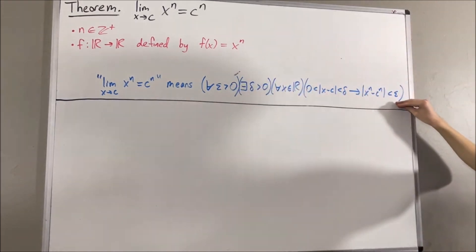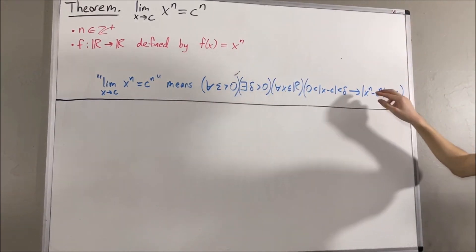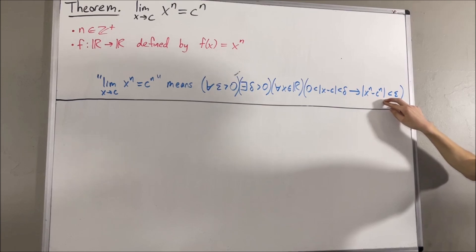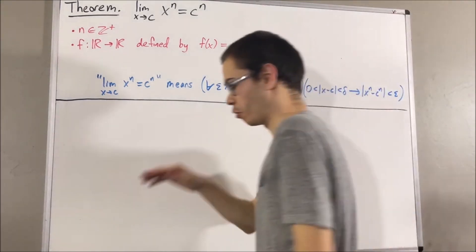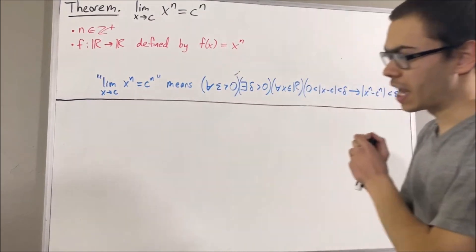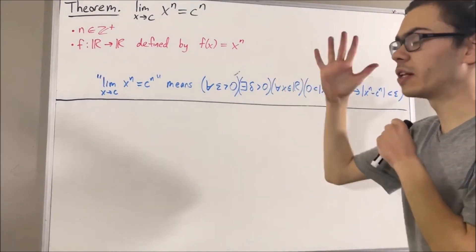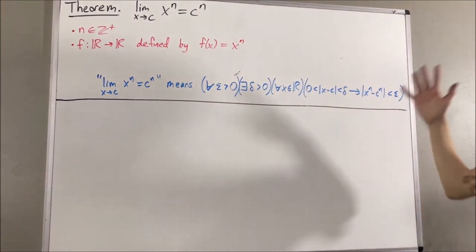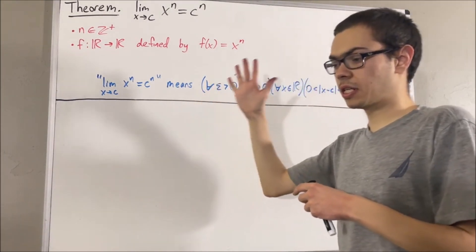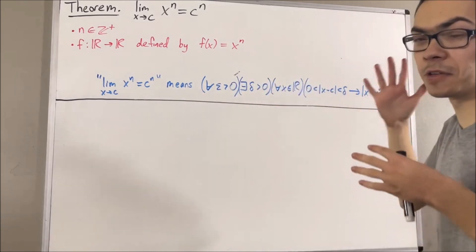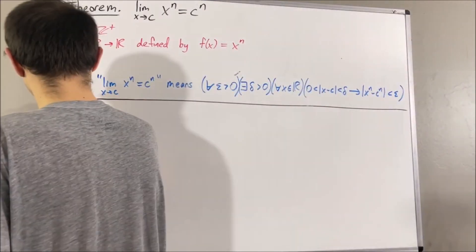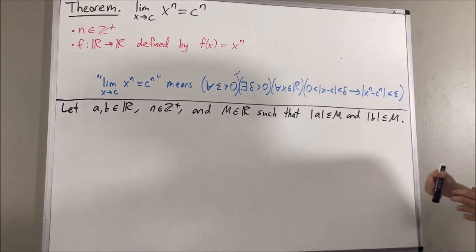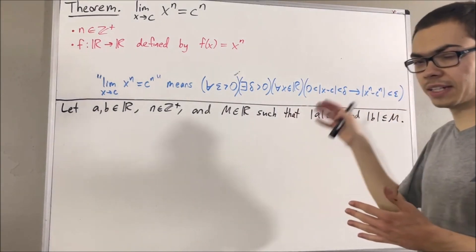To prove this, it might be useful to understand how we can manipulate the absolute value of x to the n minus c to the n. So we are first going to prove a preliminary result. We will consider two arbitrary real numbers a and b, an arbitrary positive integer n, and an arbitrary real number capital M, such that the absolute value of a and the absolute value of b are both less than or equal to capital M.